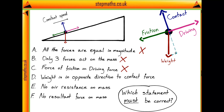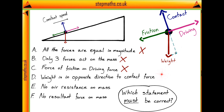Statement D says that the weight is in the opposite direction to the contact force. We know that weight acts straight downwards because gravity acts straight downwards — gravity doesn't act along the direction of the slope, otherwise nothing would ever roll down a slope since there would be no component of weight parallel to it. There is a perpendicular component of weight that is in the same direction as the contact force, but that's not what statement D is saying, so it's false as well.